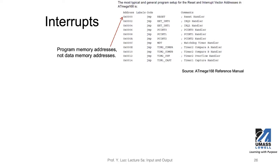These are program addresses, not data memory addresses. For these low-end microcontrollers, they always have separate program memory from data memory — that's called the Harvard architecture. For modern microprocessors like Intel, they have the same address space, but for these low-end microcontrollers they always have separate program memory and data memory.